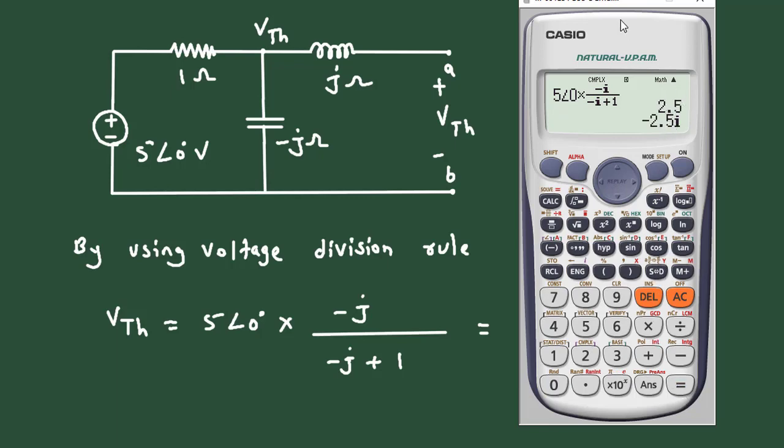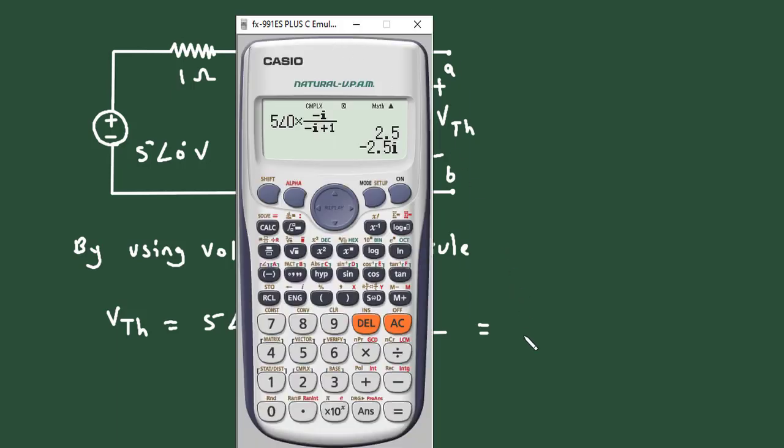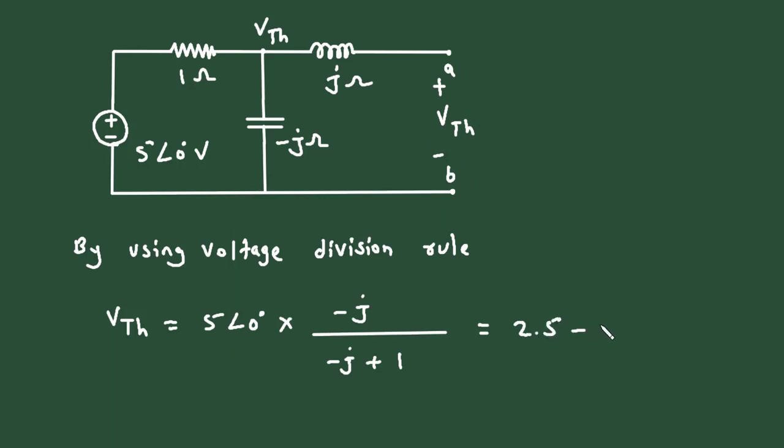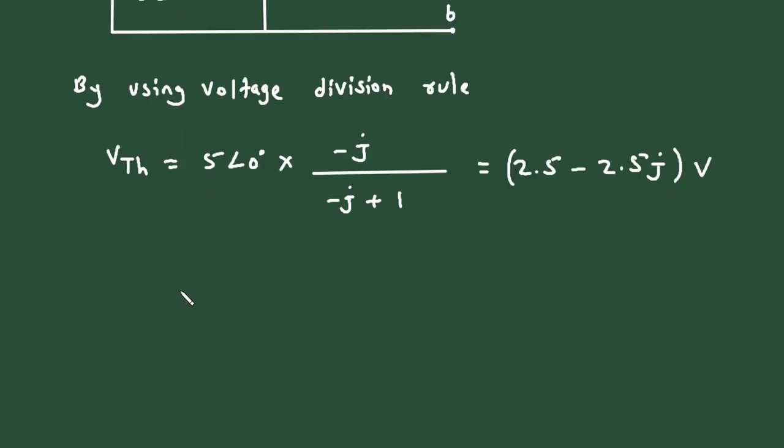So it is 2.5 minus 2.5j. And since it is a voltage, its unit will be volts. So this is the value of Vth in rectangular form.